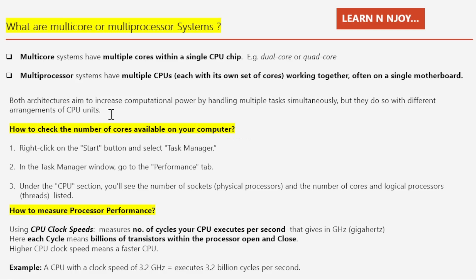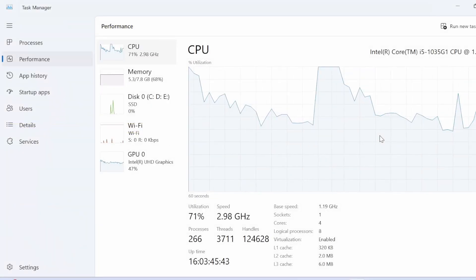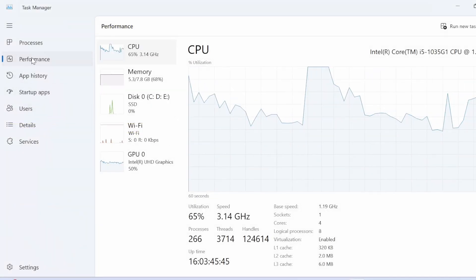Now, you must be thinking how we can check the number of cores on our system. It's a very easy question. Here is a quick check: first, right-click on the Start button and select Task Manager. In the Task Manager window, go to the Performance tab. Under the CPU section, you will see number of sockets, physical processors, number of cores, and logical processor threads listed. Let me show you. I have opened Task Manager and went to the Performance tab.